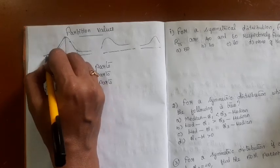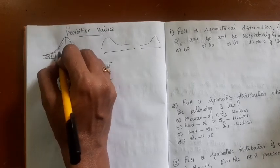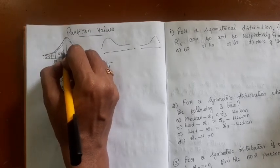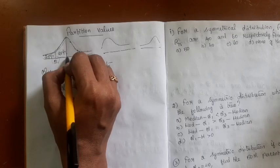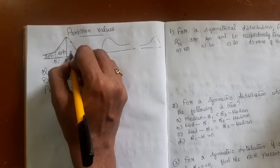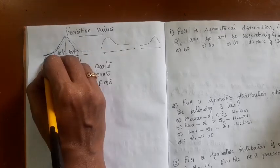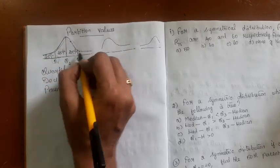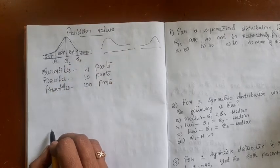Q1 covers 25% of the observations. Q2 covers 50% of the observations. Q3 covers 75% of the observations.